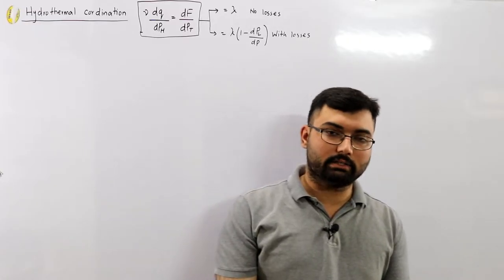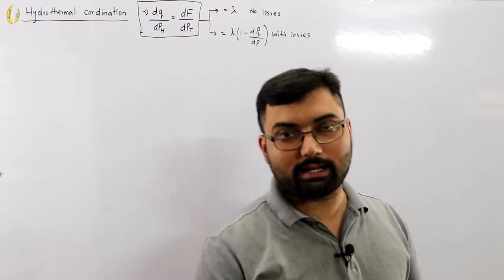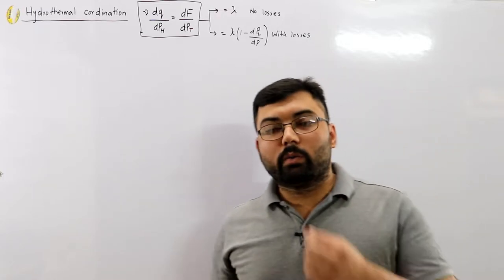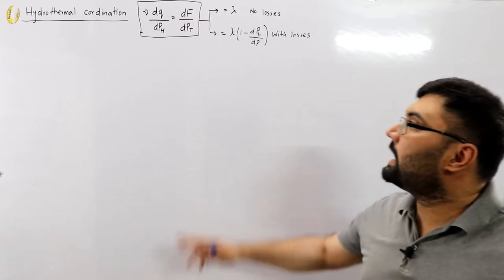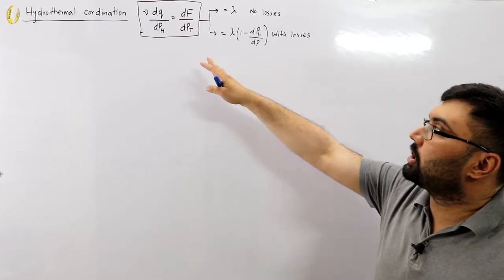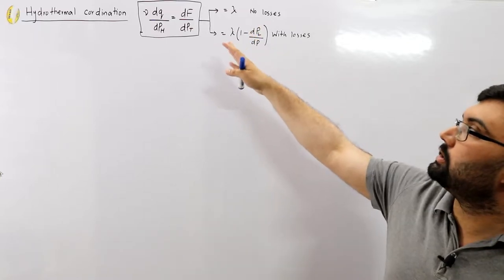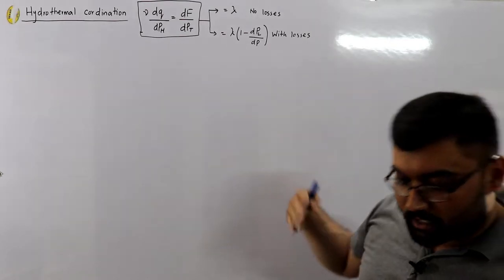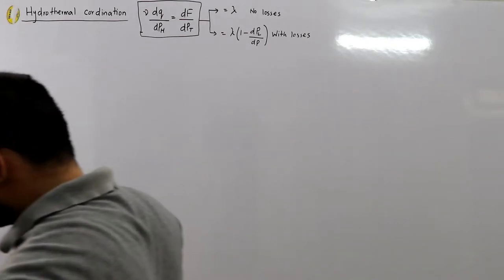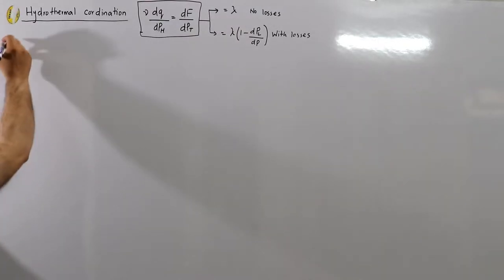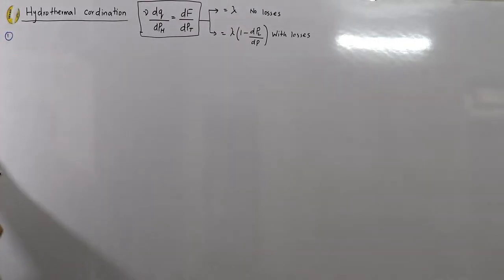Hello everyone, welcome back to the channel. Salar Khan here. In the previous video we talked about hydrothermal coordination, and the coordination equation which is equal to lambda if no losses are considered, and equal to lambda into (1 minus a term) if losses are considered. Today we see an example.